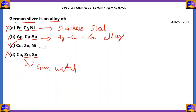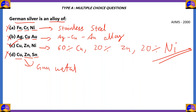German silver has the composition 60% Cu, 20% Zn, and 20% Ni. So the right answer is Cu, Zn, and Ni — not Cu, Zn, and Sn. This alloy is known as German silver. Option D forms gun metal; option B forms an Ag-Cu-Au alloy; option A forms stainless steel. Also note that copper, zinc, and nickel individually are coinage metals.